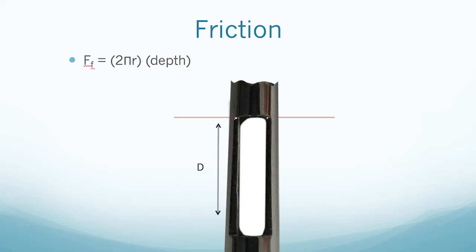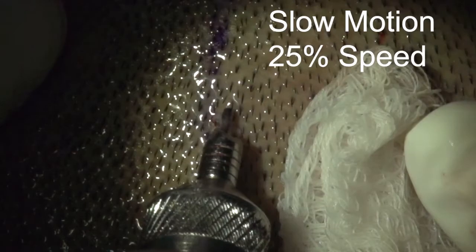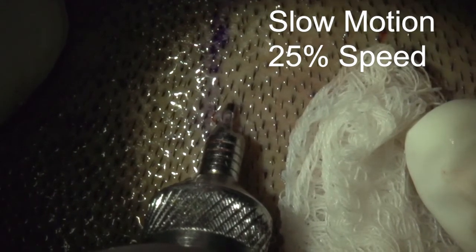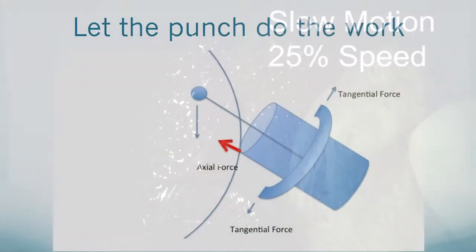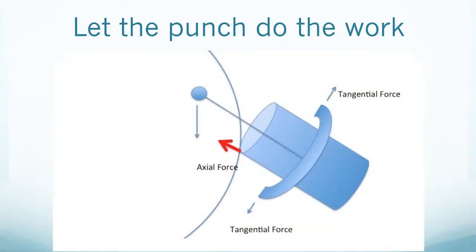In short, resistance is a function of the depth of the incision and the diameter of the punch. So resistance is equal to the depth times 2πr, where r is the radius. Opening the sides of the punch reduces resistance as the punch enters the skin. A reduction in resistance internally allows for easier penetration of the punch with less axial force. A high axial force always increases the probability of follicle transection.